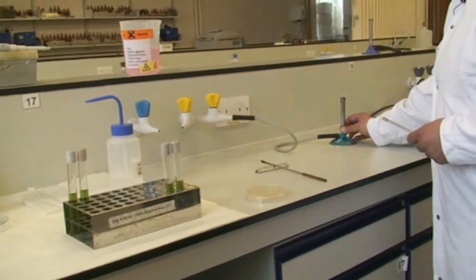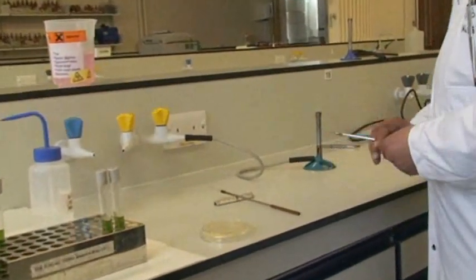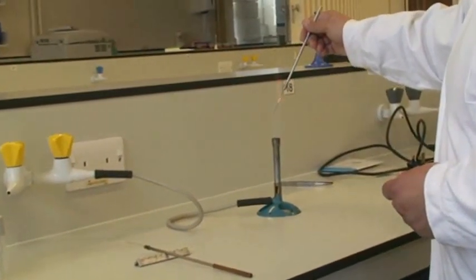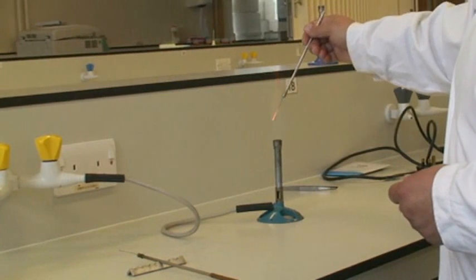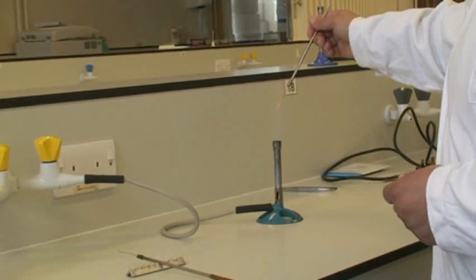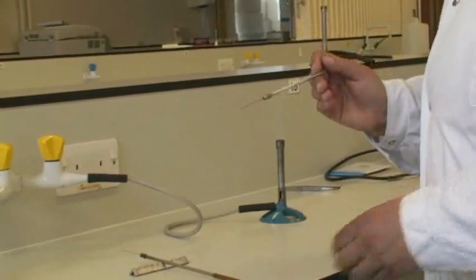I'm just moving the Bunsen again to the hottest part of the flame, sterilizing the straight wire till it's red hot, because you want to make sure that the only bacteria you're actually inoculating into those Hugh and Leifson's agar media are just the bacteria that's on here.